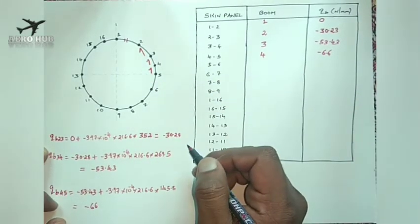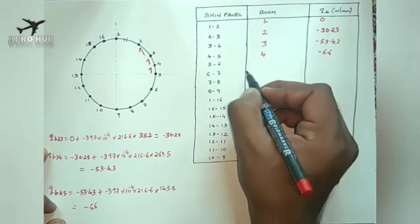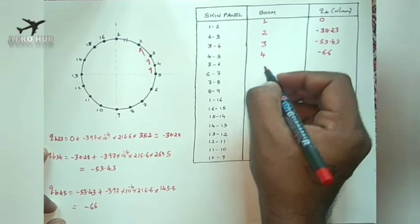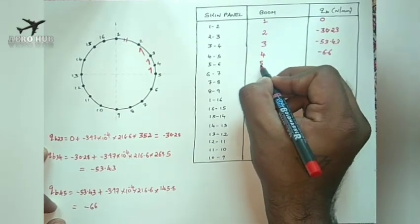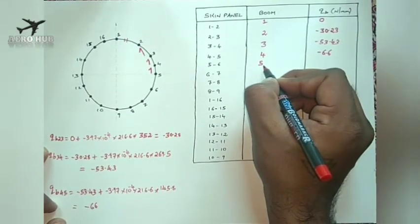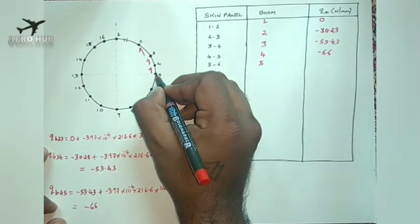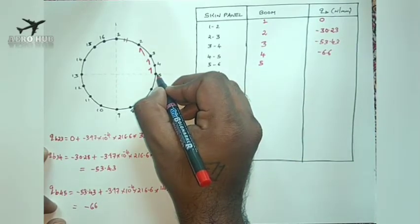For skin panel 5 to 6, we are crossing boom 5. Boom area 5 is exactly at the neutral axis.